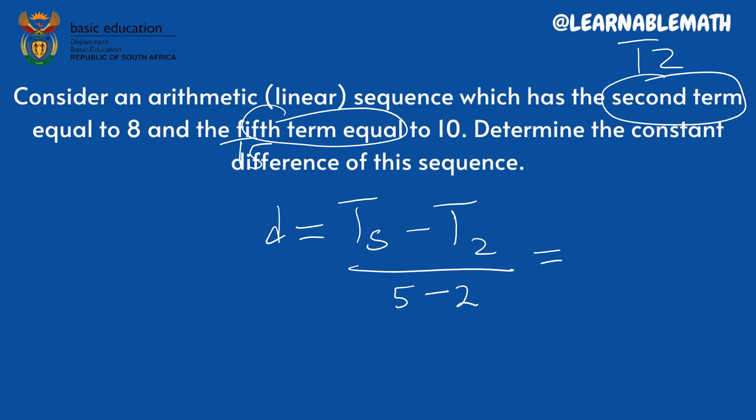So what is term number 5? Term number 5 is 10, minus what is term number 2 is 8, divided by 5 minus 2, which is 3. Therefore, finally, our common difference will be equal to 10 minus 8, which is 2 over 3. So that is the common difference in just 10 seconds.